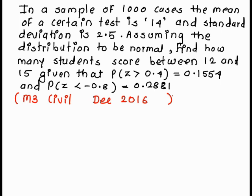Assuming the distribution to be normal, find how many students score between 12 and 15. Given that the probability of z greater than 0.4 equals 0.1554 and the probability of z less than minus 0.8 is 0.2881.